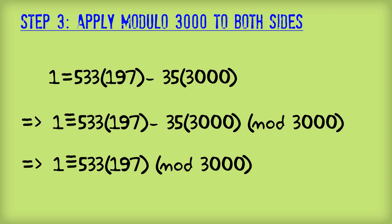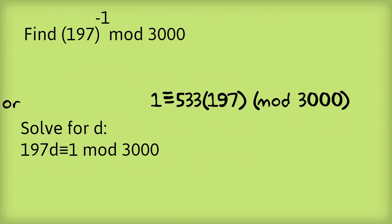that 1 is equivalent to 533 times 197 mod 3000. So that means that if we take 197 and we multiply it by 533, we just get 1 in this modulo 3000 world. And that's precisely what we were asked to solve, to work out the inverse of 197.